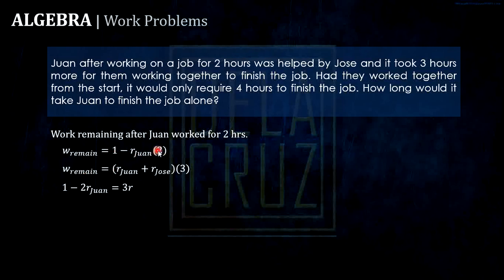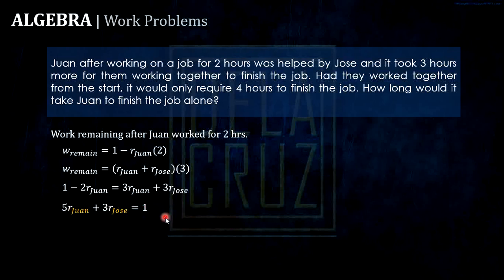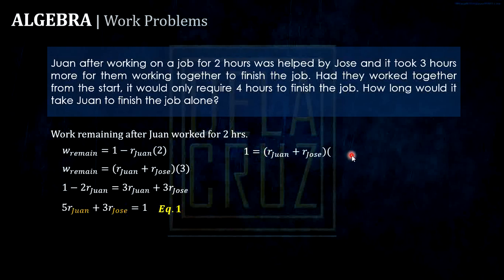Simplifying and combining like terms, we get Equation 1. My technique here is to work in terms of rate so the calculator solution is easier. Another condition: had they worked together from the start, it would only require four hours to finish the job. So one work equals the sum of their rates times four hours, giving us Equation 2 after rearranging.